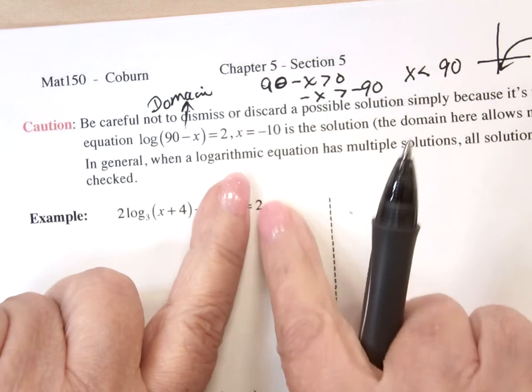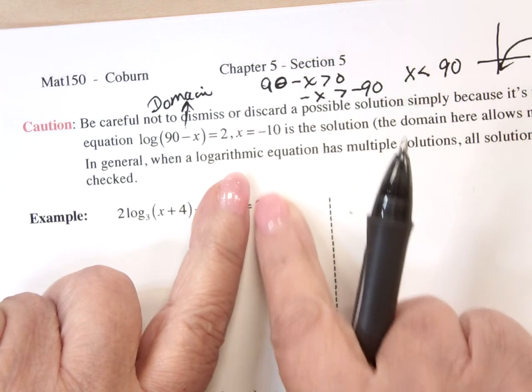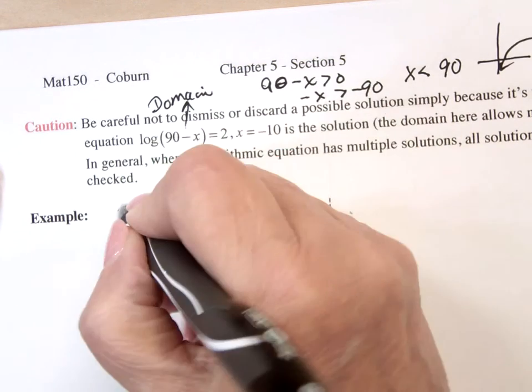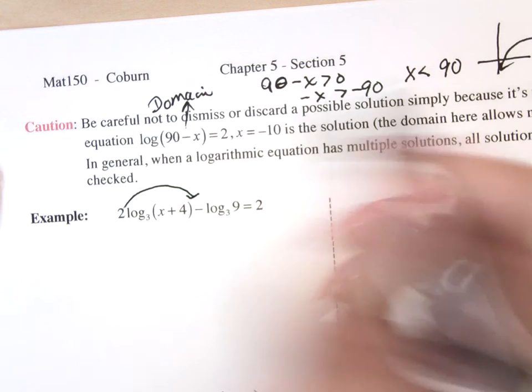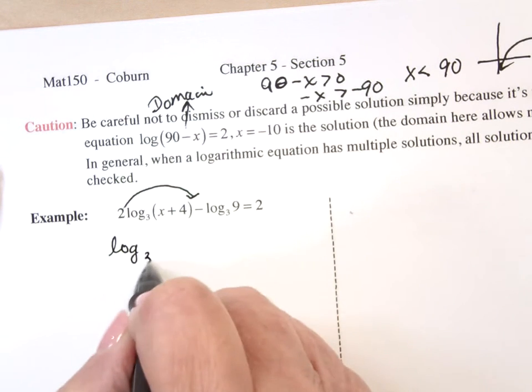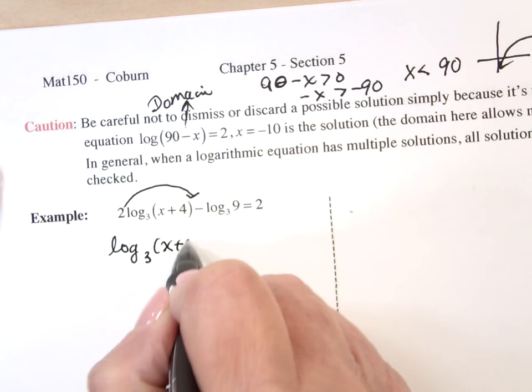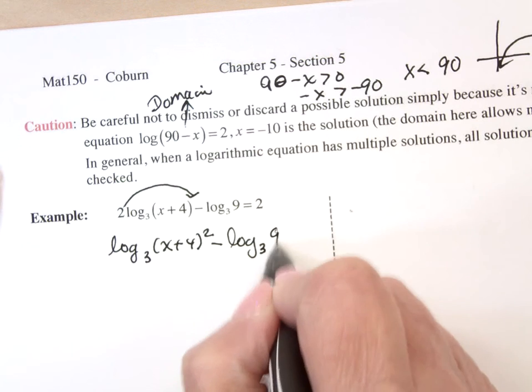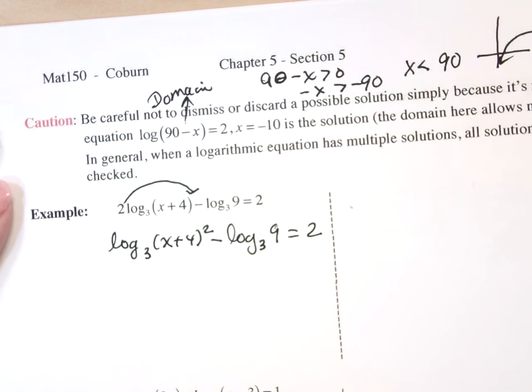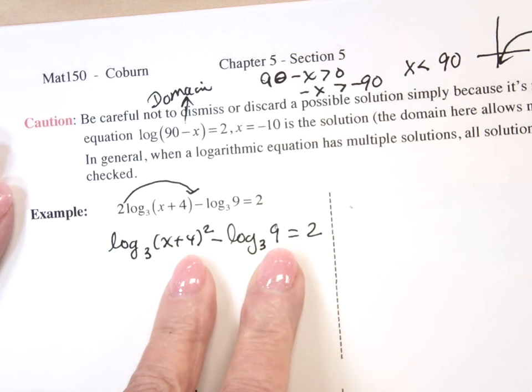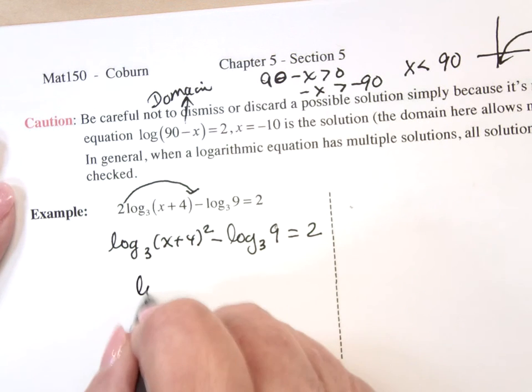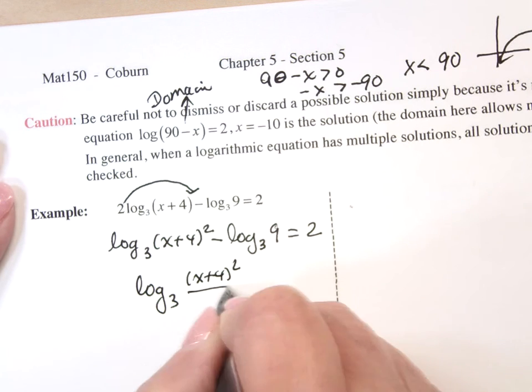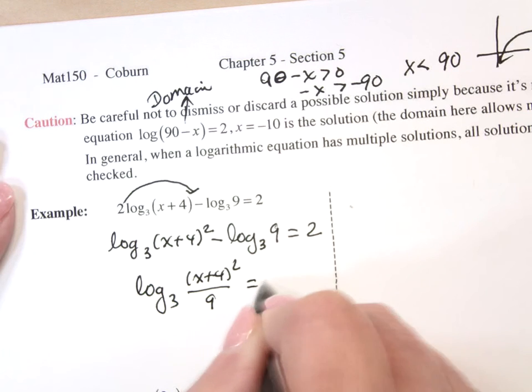So here we go. Now notice there's no logarithm on this side. But I need to first, using the properties of logs, bring the 2 up so that log base 3 of (x+4)² minus log base 3 of 9 equals 2. This turns into a quotient, log base 3 of (x+4)² divided by 9 equals 2.